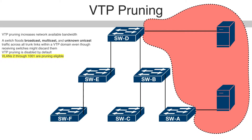VTP pruning blocks unneeded flooded traffic to VLANs on trunk ports that are included in the pruning eligible list. Only VLANs included in the pruning eligible list can be pruned. By default, VLANs 2 through 1001 are pruning eligible on switch trunk ports. If the VLANs are configured as pruning ineligible, the flooding continues.